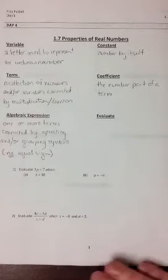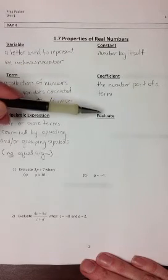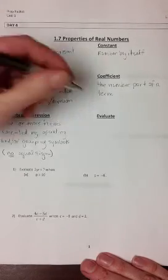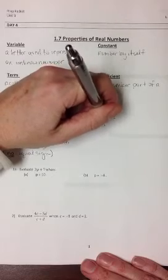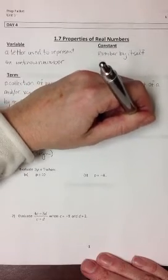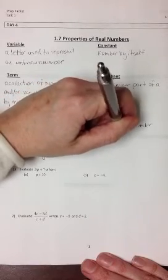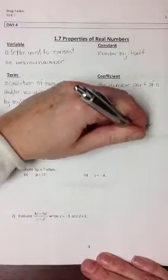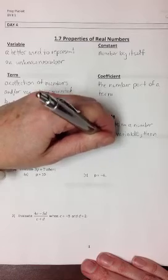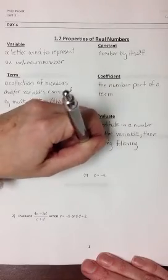And then one last vocabulary word here before we start using some of these. You'll often see in your directions that they want you to evaluate something, evaluate an expression. And what that means is that you are to substitute in a number for the variable, and they'll tell you which number they want you to sub in. Then simplify by following order of operations.